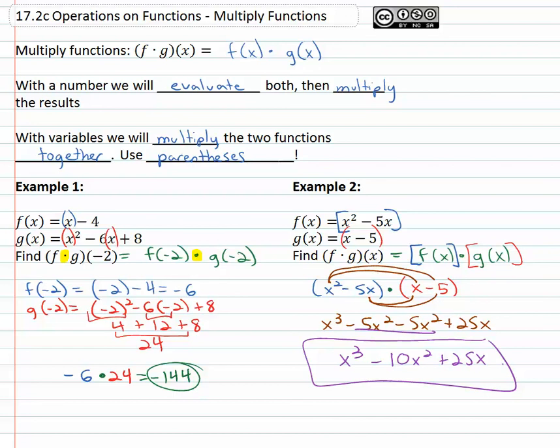We have our solution. When multiplying functions together, if we have a number, evaluate both and multiply the results. If we have a variable, simply multiply the functions together.